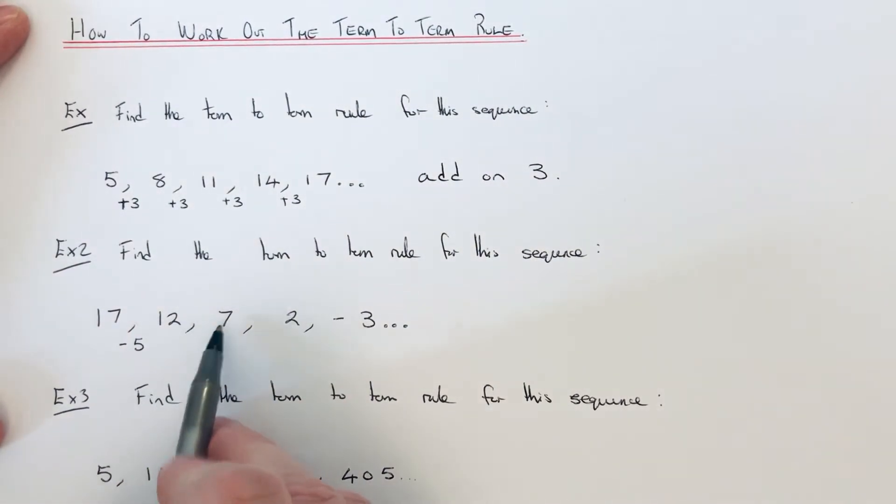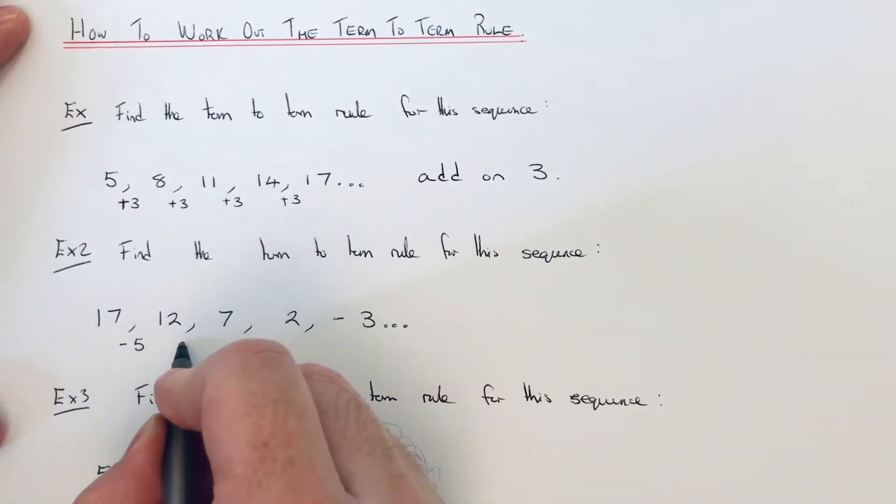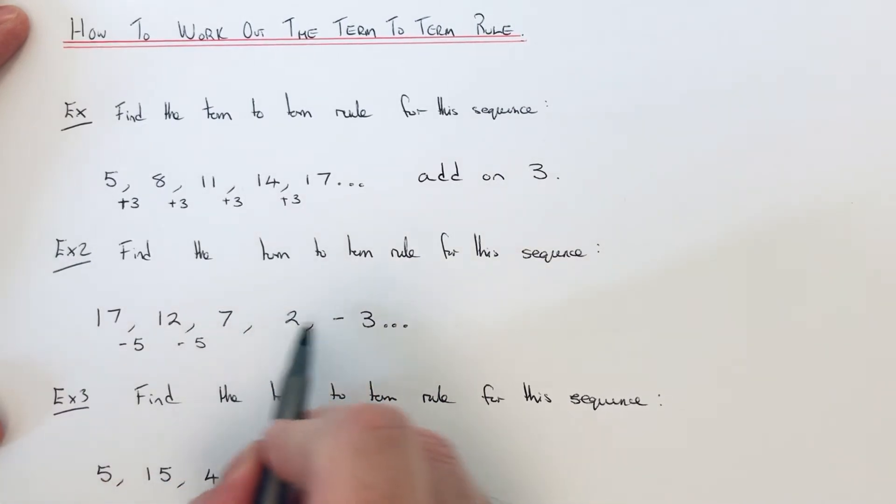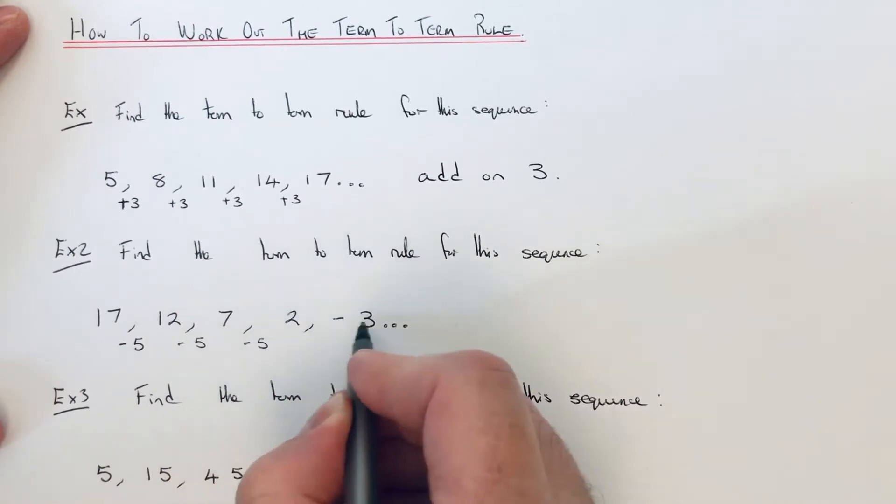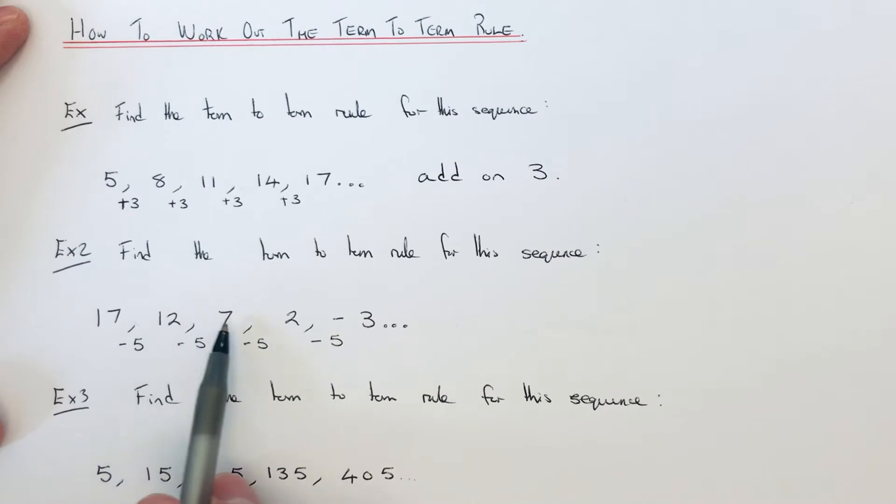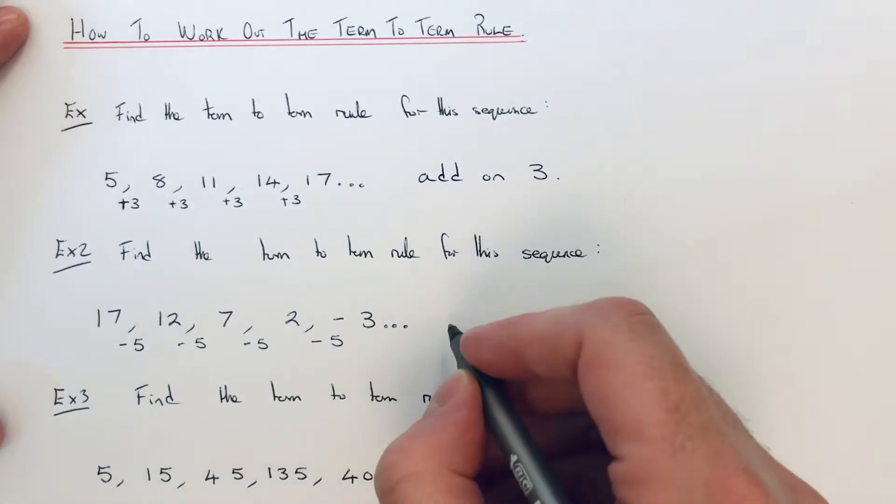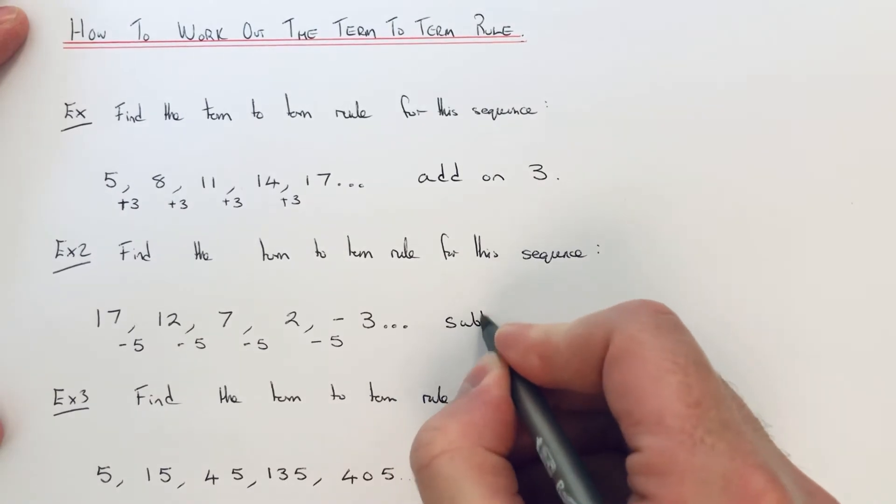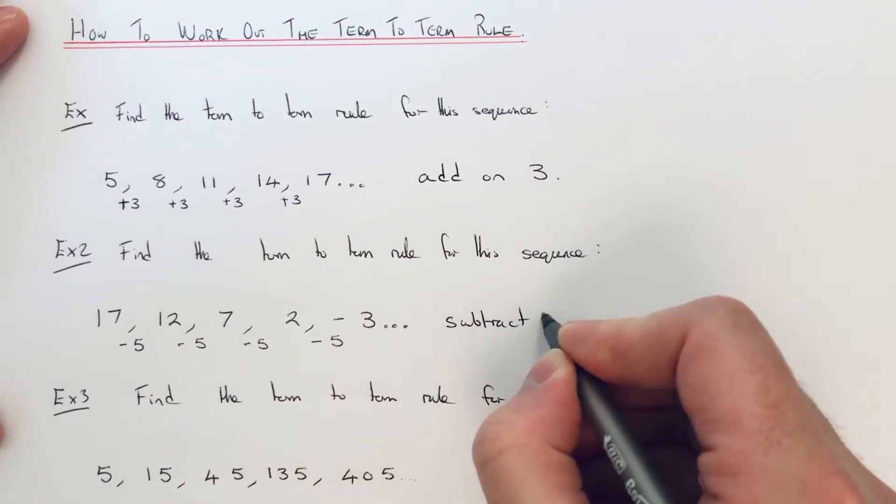The difference between 12 and 7, that's also 5. So let's just check it for the remaining terms. So the difference between 7 and 2 is also 5. And 5 for the last one. So to get the next term then we just need to subtract 5 from the previous number. So the term to term rule then is subtract 5.